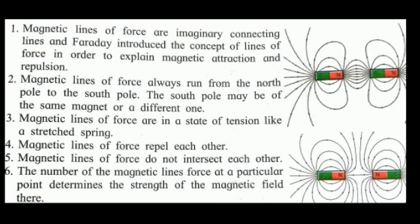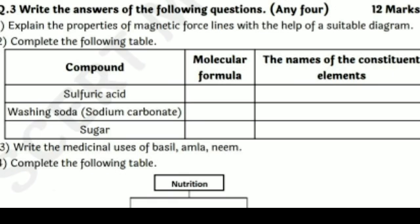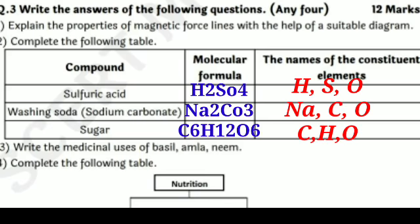Complete the following table of compound, molecular formula, and constituent elements. First, sulfuric acid: molecular formula H₂SO₄, elements are hydrogen, sulfur, and oxygen. Second, washing soda (sodium carbonate): molecular formula Na₂CO₃, elements are sodium, carbon, and oxygen. Third, sugar: molecular formula C₆H₁₂O₆, elements are carbon, hydrogen, and oxygen.